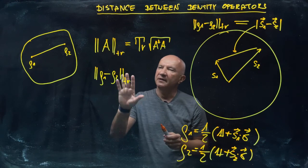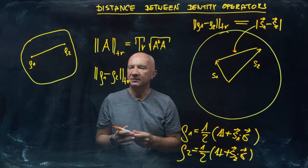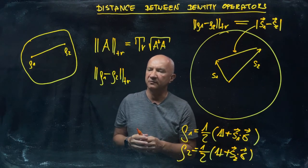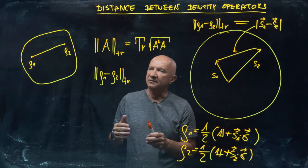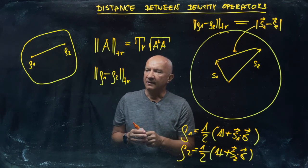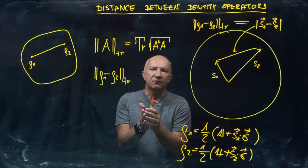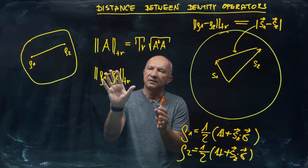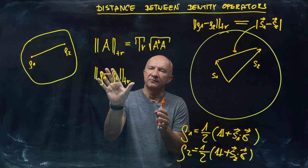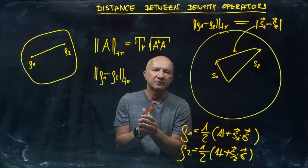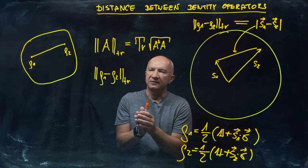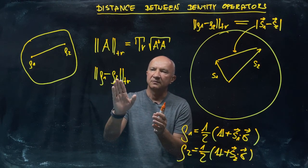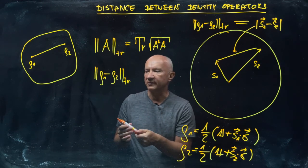The reason why trace distance is picked up is because it connects very nicely with another distance used in statistics, called the statistical distance. That one is quite often used when we try to distinguish between different probability distributions.